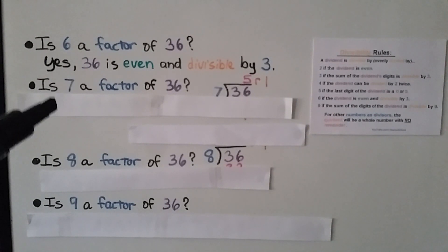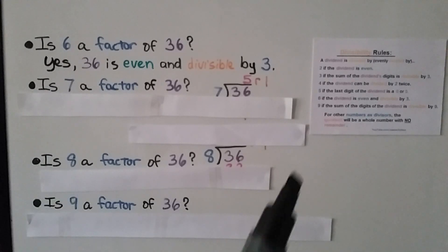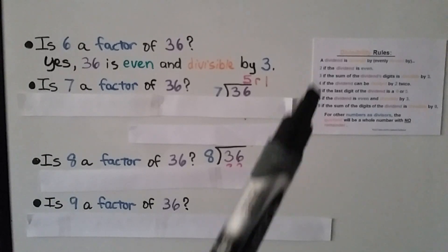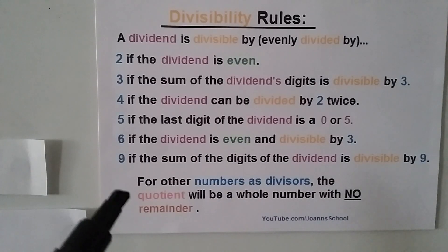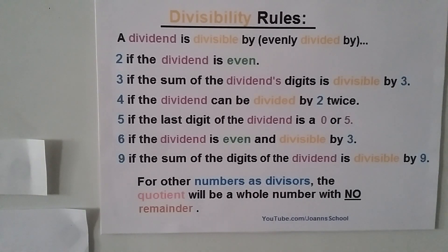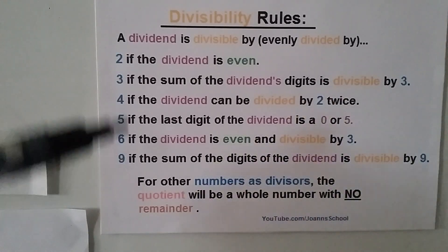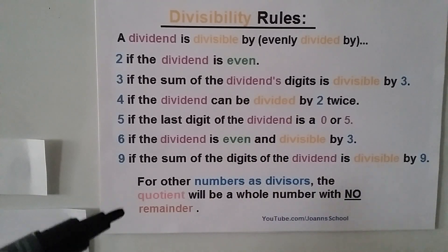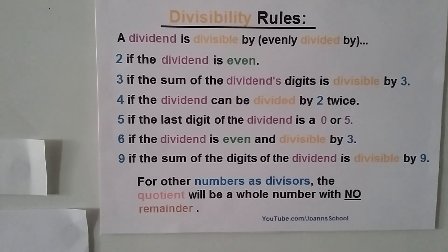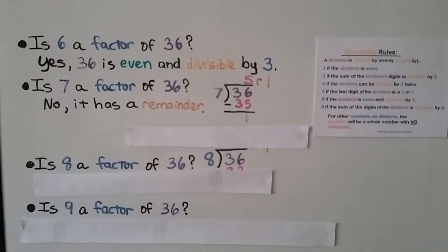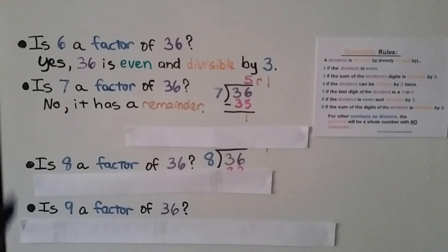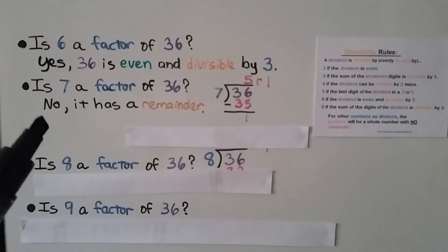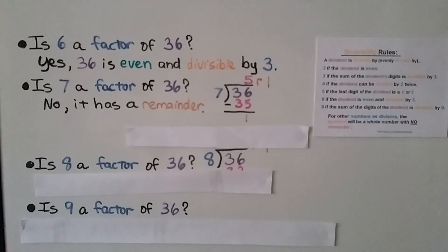Is 7 a factor of 36? 7 isn't in our divisibility rules list. For numbers not listed, we just check if the quotient is a whole number with no remainder. When we do 36 divided by 7, we get 5 remainder 1. So no, 7 is not a factor of 36 because there is a remainder.